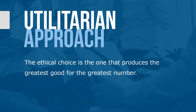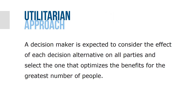The utilitarian approach is a method of ethical decision-making saying that the ethical choice is the one that produces the greatest good for the greatest number. A decision-maker is expected to consider the effect of each decision alternative on the parties and select the one that optimizes the benefits for the greatest number of people. This approach is cited as the basis for the recent trend among organizations to monitor employee use of the internet and personal habits such as alcohol and tobacco consumption, because such behavior affects the entire workplace.